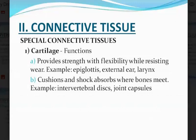There are also special connective tissues. Examples include cartilage. It provides strength with flexibility whilst resisting wear — for example, the epiglottis, the external ear, the larynx. It also cushions and provides shock absorption where bones meet — for example, intervertebral discs and joint capsules. Those are examples of a special connective tissue known as cartilage.